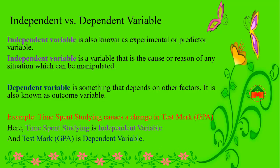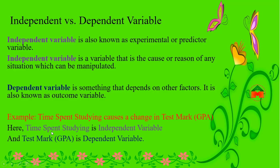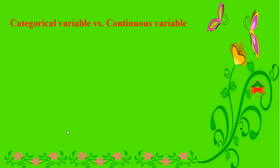Here we can see an example of independent and dependent variables. The example is: time spent studying causes a change in the test mark. The more time spent on studying will result in a change in the test mark. Here, time spent studying is the independent variable, and the test mark (GPA) is the dependent variable, as this mark depends on time spent studying.